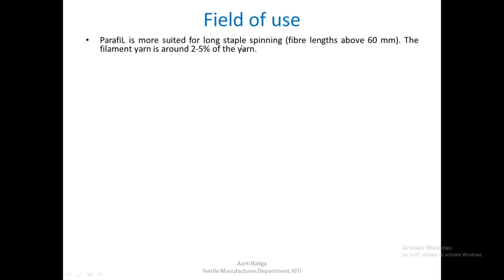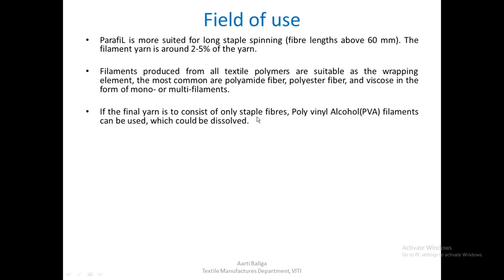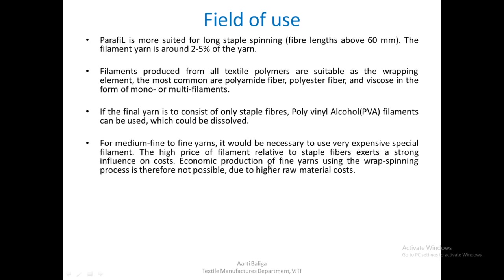This system is commercially known as Parafil and is more suited for long staple spinning — fibres should be above 60 mm. The filament yarn used is around 2 to 5 percent of the entire yarn. Filaments produced from all textile polymers — polyamide, polyester, viscose, multi or mono — are suitable as a wrapping element. If the final yarn is to consist of only staple fibres, PVA can be used as the filament for wrapping and later dissolved after processing, similar to the use of polyvinyl alcohol fibres in other systems.